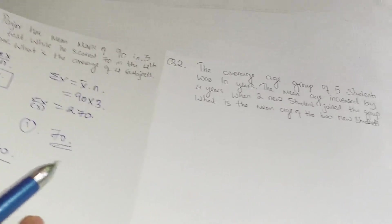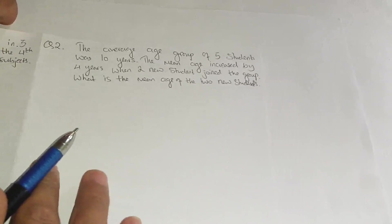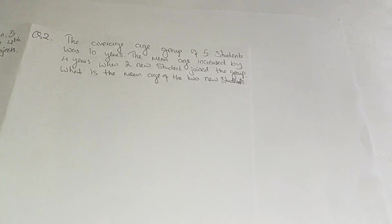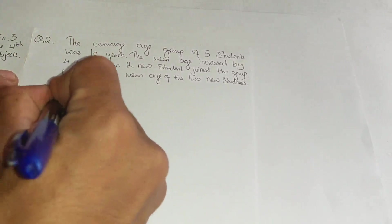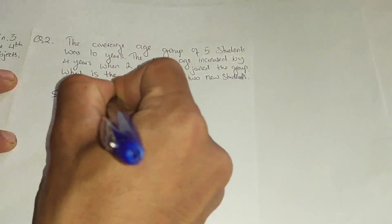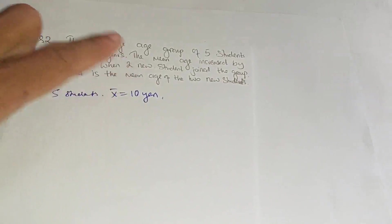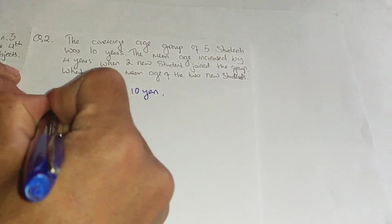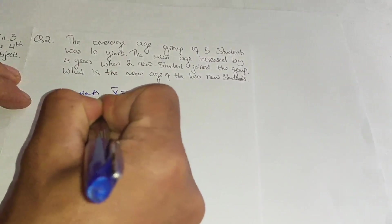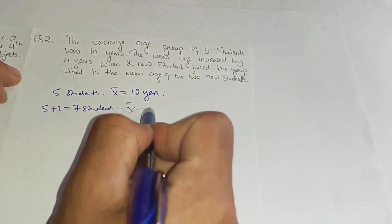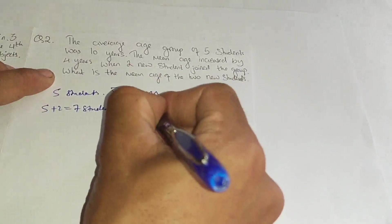Question 2: The average age of a group of 5 students was 10 years. When 2 new students joined the group, the mean age increased by 4 years. So 5 students have mean = 10 years, and 5 + 2 = 7 students have a new mean = 10 + 4 = 14 years.